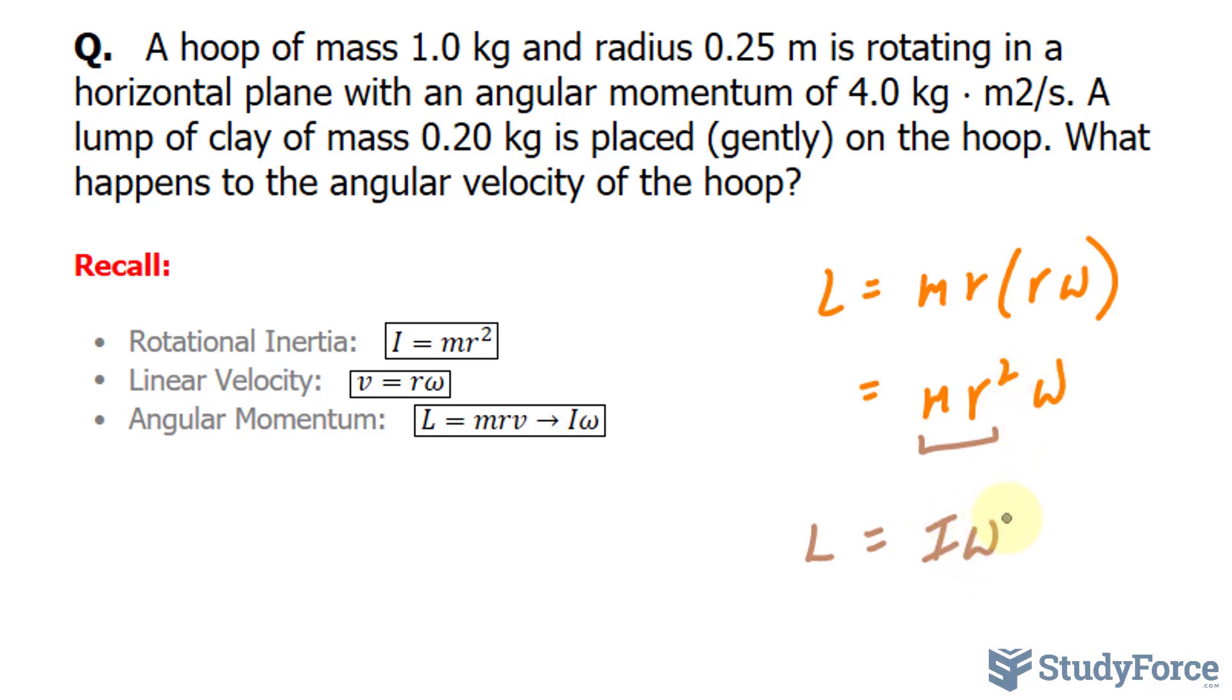The way I'll tackle this problem is by first calculating the moment of inertia before the lump of clay is placed on the hoop. I'll substitute that value into here alongside the angular momentum provided in the question. The purpose here is to compare the angular velocities before the clay was added and after it was added. If that's confusing to you, let me show you the math and it will become more clear.